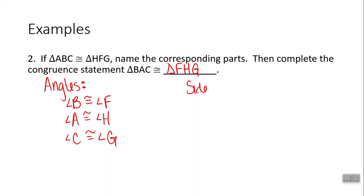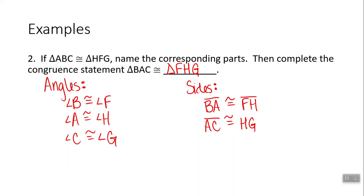When listing the sides, follow the same letter order. Starting with BA, the corresponding side is FH — first and second letters matching. Side AC is congruent to side HG, following the second and third letter pattern. And side CB is congruent to side GF. We've now named all corresponding parts — angles and sides — and written the congruence statement.